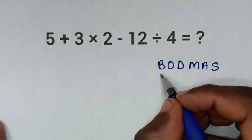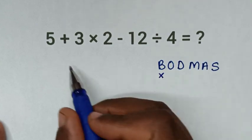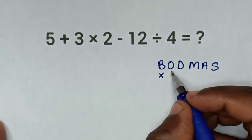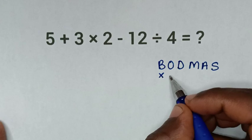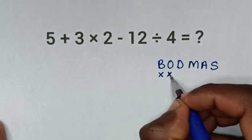B is bracket, we don't have a bracket in this problem, or order or exponent, we don't have order or exponent.